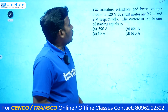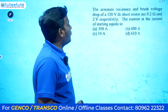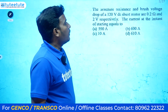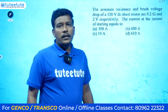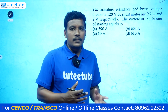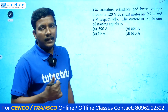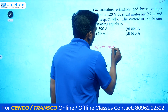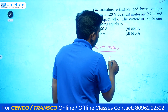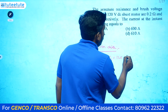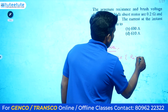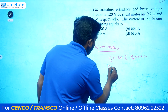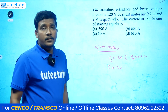The next question: the armature resistance and brush voltage drop of a 120-volt DC shunt motor are 0.2 ohms and 2 volts respectively — find the current at the instant of starting. Whenever solving questions on electrical machines, first note down the given data. Given: terminal voltage Vt = 120 V, armature resistance Ra = 0.2 ohms, and brush drop = 2 V.